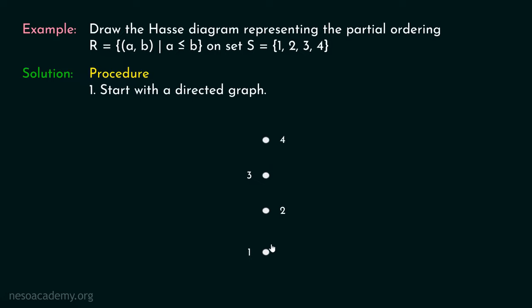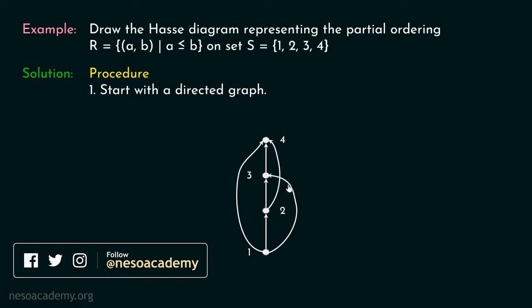We know 1 is related to 2, so draw an edge from 1 to 2. Then 2 is related to 3, so draw an edge from 2 to 3. Since 1 relates to 2 and 2 relates to 3, we can also draw a transitive edge from 1 to 3. Since 3 is related to 4, draw an edge from 3 to 4 — and transitively, edges from 1 to 4 and 2 to 4. Plus self-loops for all vertices. This is our directed graph.